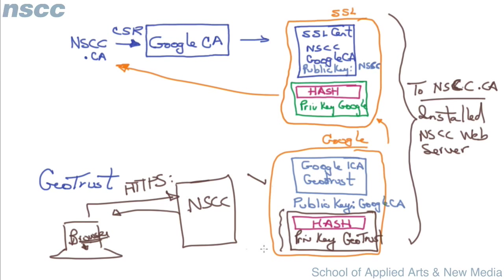The browser says: I trust all root CAs in my list. Because it can decrypt this hash, it trusts anything that this root CA trusts. The root CA has signed Google's intermediate CA certificate, so it automatically trusts that, and it extracts the public key from Google's intermediate CA certificate.